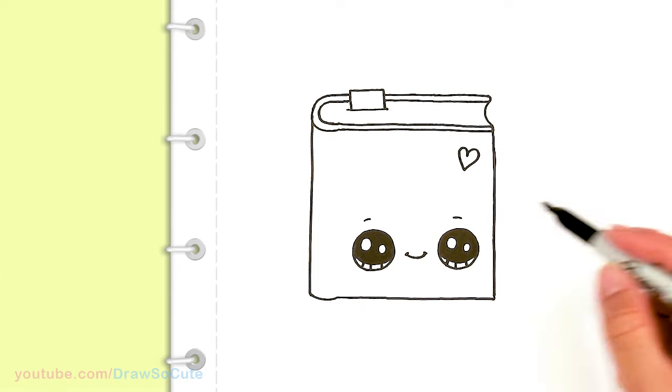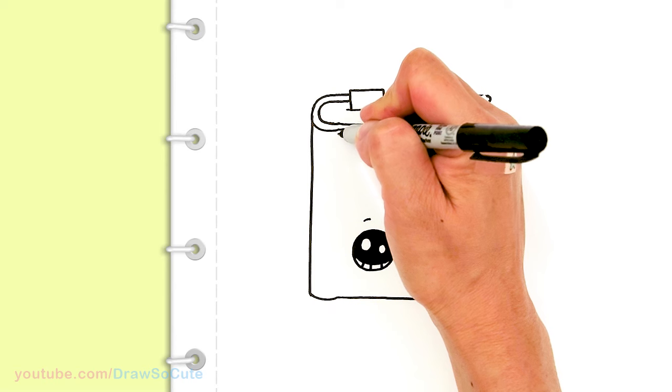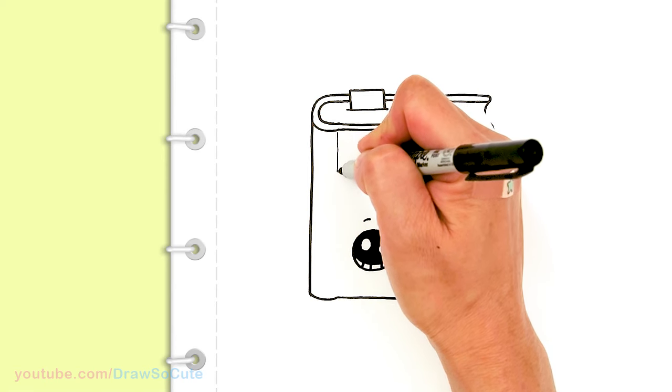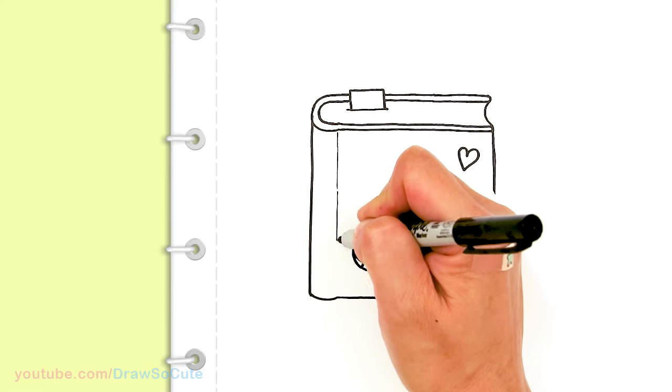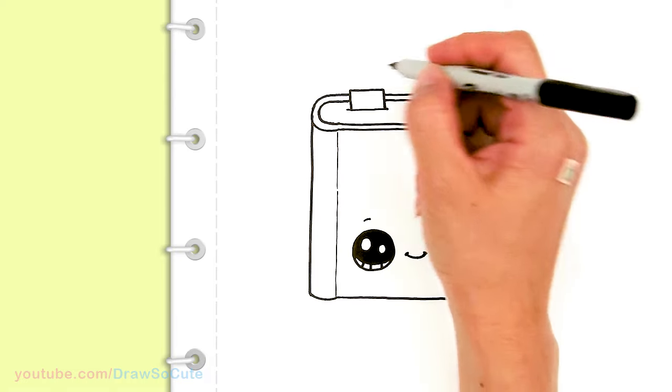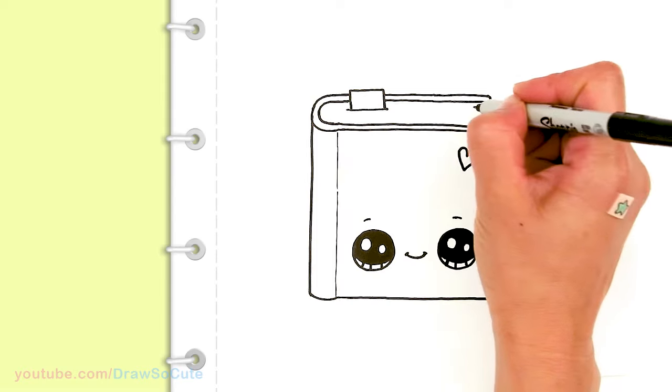I'm going to come in here now with a thinner Sharpie to draw all the little details. This is just an ultra fine point Sharpie, just a little bit thinner. And like I said, I'm going to draw the spine right here. So I'm just going to use a thin line and drag it all the way down. Sometimes you can break it up if you want. And come all the way down. And then let's come in here and we're going to draw some lines so it just makes it look like pages.